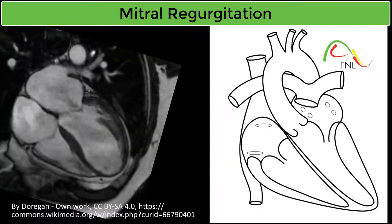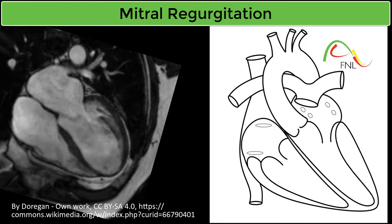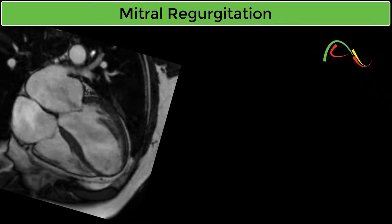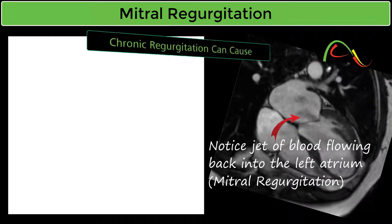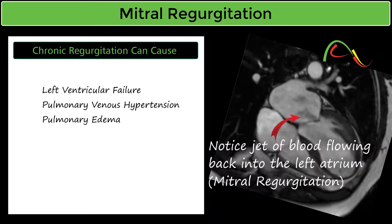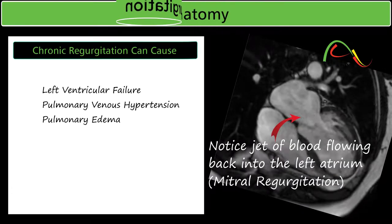Mitral valve regurgitation is always caused by the incomplete closure of the mitral valve regardless of underlying etiology. Chronic regurgitation can lead to left ventricular failure, pulmonary venous hypertension, and pulmonary edema. Mitral regurgitation is the most common valvular abnormality worldwide.